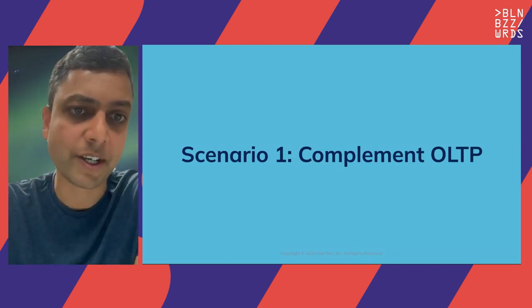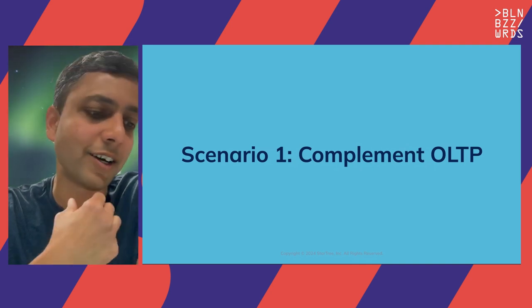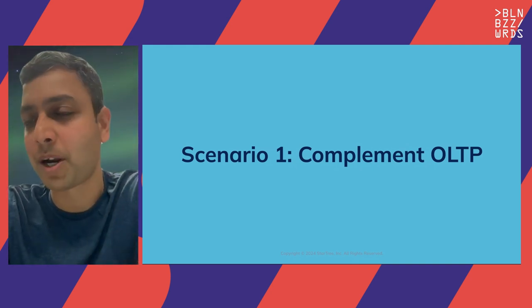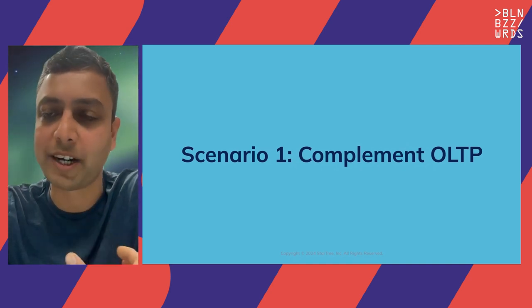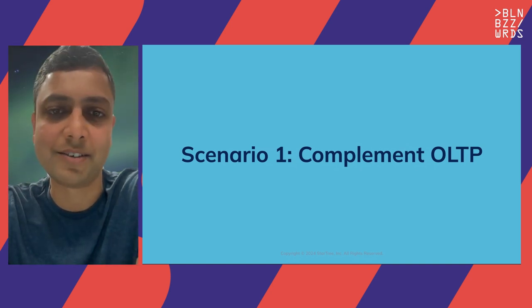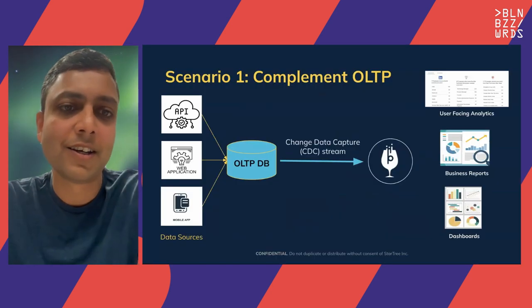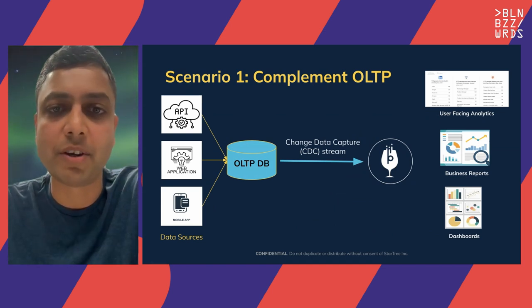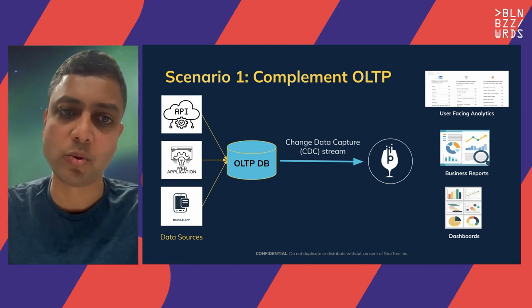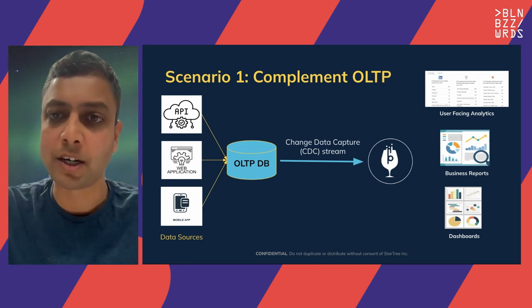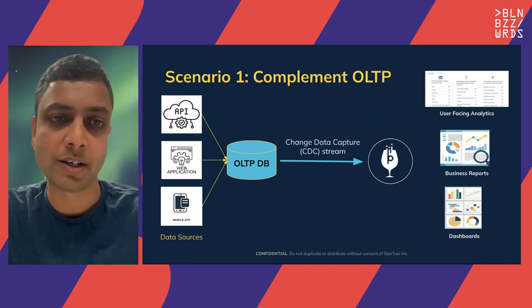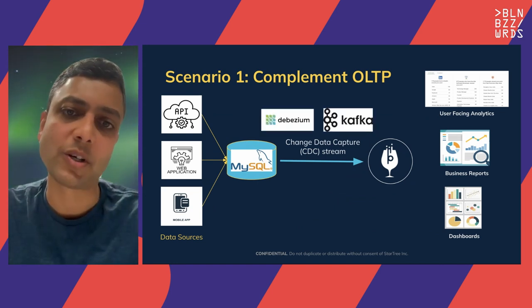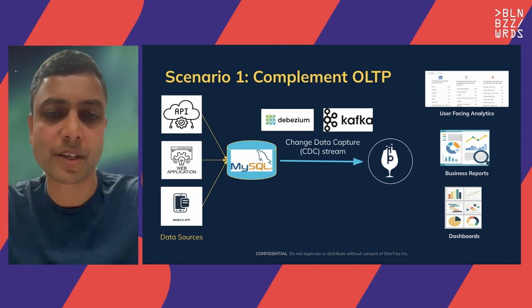So let's get into the first scenario — how can Pinot help build analytical use cases and complement the OLTP database? In scenario one, we still have a primary OLTP database but offload some data into Pinot to build specific analytics. The data still flows into the primary OLTP DB, and we use a change data capture (CDC) stream to capture some of that data into Pinot and then use it to build different use cases. I'll show a quick demo using MySQL for the OLTP DB, Debezium and Kafka to capture the CDC stream, and Apache Pinot for the analytical DB.